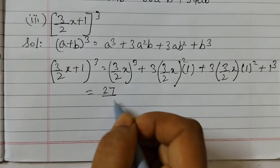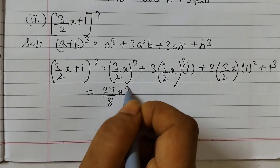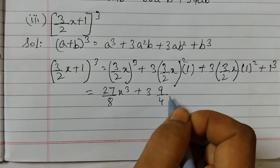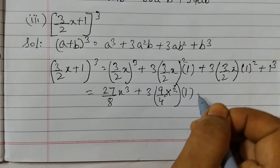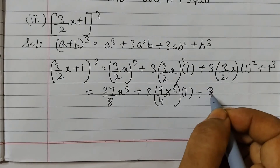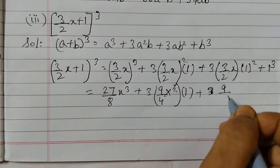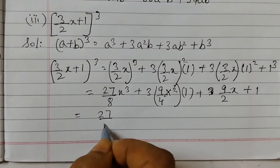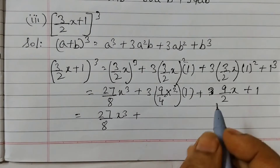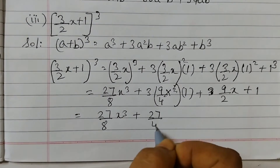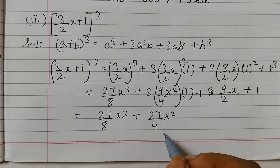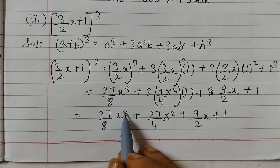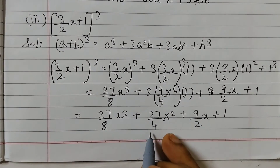Simplifying: 3³ = 27, 2³ = 8, so (3/2 x)³ = 27/8 x³. Then 3 × (3/2)² = 3 × 9/4 = 27/4, giving 27/4 x². Then 3 × 3/2 x = 9/2 x. And 1³ = 1. So the result is 27/8 x³ + 27/4 x² + 9/2 x + 1. This is in standard form with exponents 3, 2, 1, and a constant — that's the final expanded form.